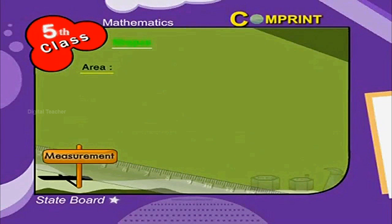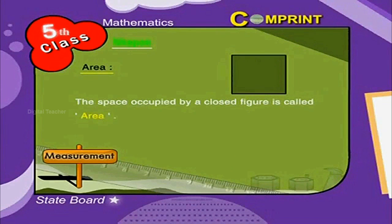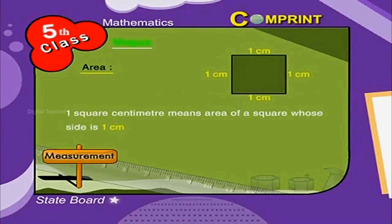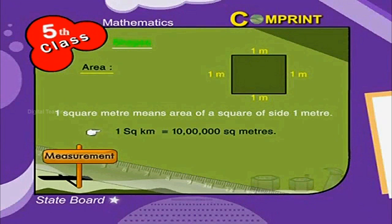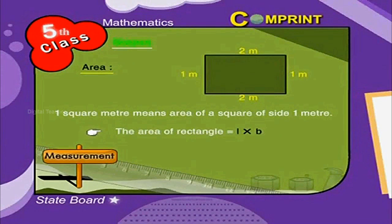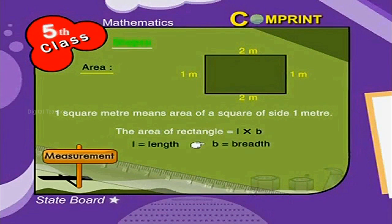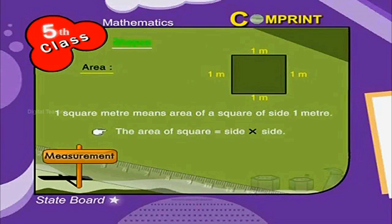Area: the space occupied by a closed figure is called area. One square centimeter means the area of a square whose side is 1 centimeter. One square meter means the area of a square of side 1 meter. One square kilometer is equal to 10 lakh square meters. The area of a rectangle is equal to l into b, where l is length and b is breadth. Area of a square is equal to side into side, that is s squared.